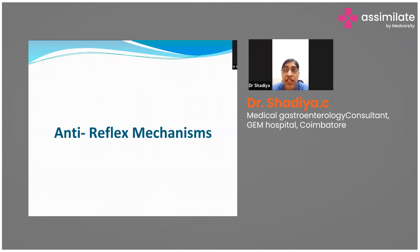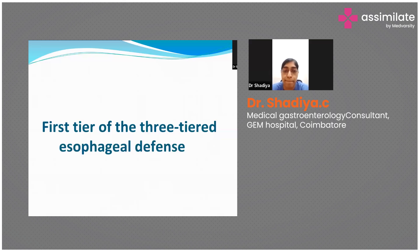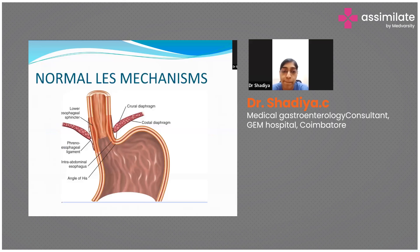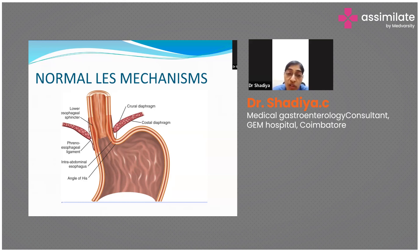Now we'll look in detail at the anti-reflux mechanisms. This image shows the normal lower esophageal sphincter mechanism. The LES is one to one-and-a-half centimeters of the lower esophagus, strengthened by the crura of the diaphragm as it passes through the right crus. It is also supported by the phrenoesophageal ligament, and the intra-abdominal position of the esophagus prevents reflux during increased straining and coughing.